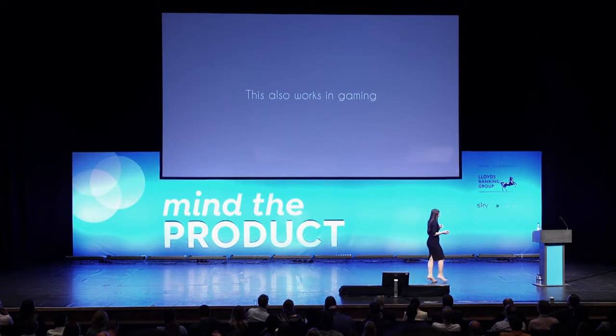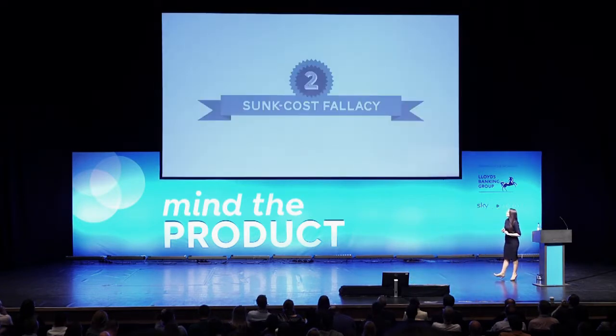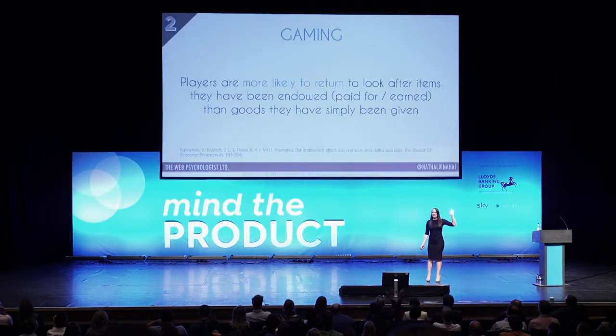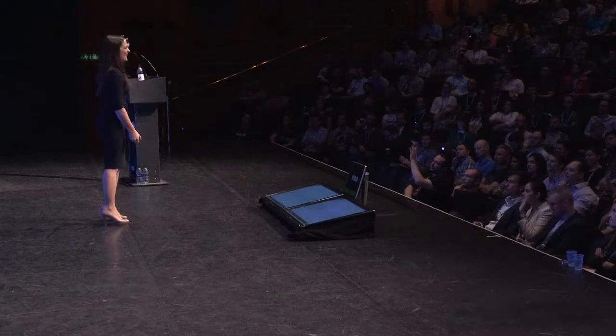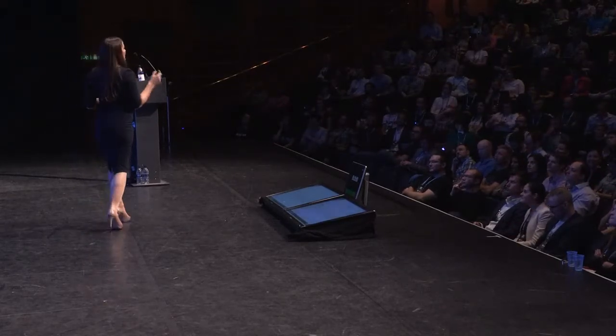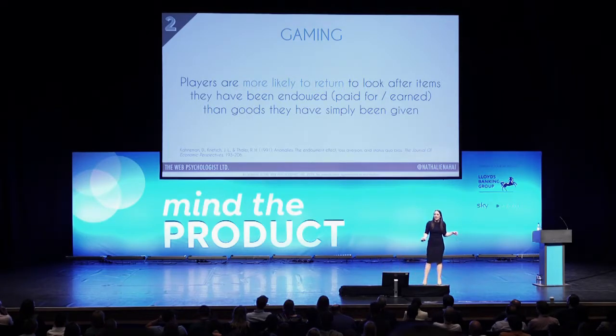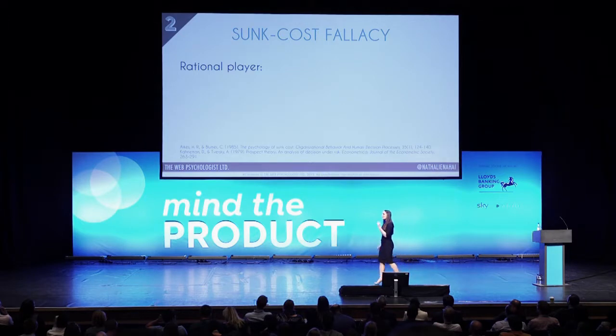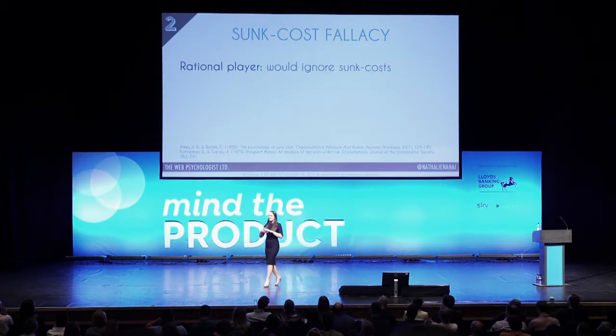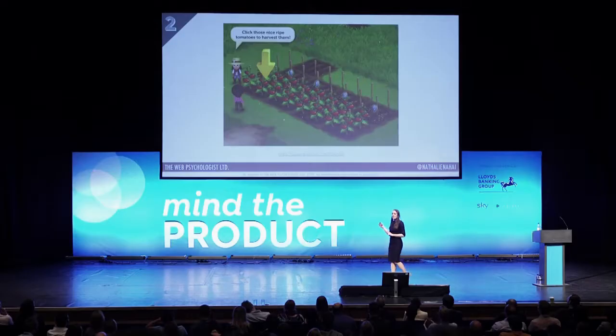That's principle number one, and it also works in gaming, which leads us to principle number two: sunk cost fallacy. Players are much more likely to return to a game like Farmville when they've got something that's been endowed to them that they need to take care of or recuperate, as opposed to things they've been given for free. If we were rational, a player would ignore the sunk cost — but in real life it's very hard to walk away. Real players are very reluctant to discontinue something they've already put effort into.